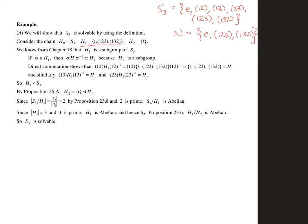The claim is that if we take the chain S3 — that's H0 — and then that has N, which we're calling H1 in it, and then we take the identity subgroup, this will give us a chain where every subgroup is normal in the next, and all of our quotients are abelian, so that we have a solvable group — so that S3 is solvable.